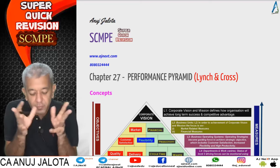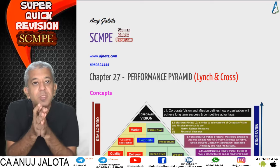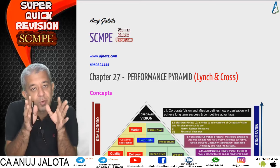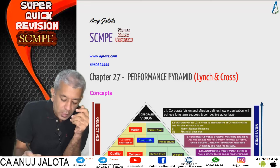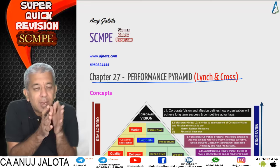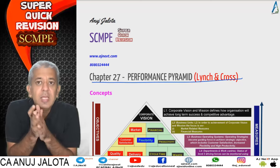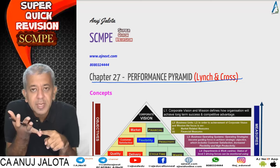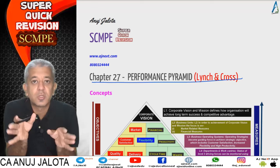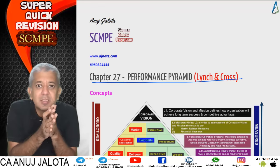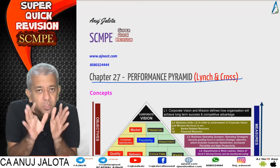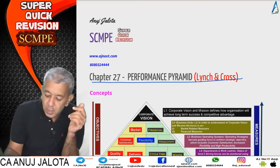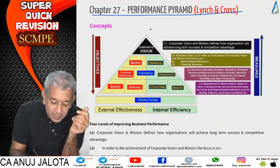Welcome back to this super quick revision series. We are on the Performance Pyramid. Before this we covered the Balanced Scorecard, Triple Bottom Line, and Performance Prism. Now it is the Performance Pyramid, by Lynch and Cross. On slightly similar lines to the Balanced Scorecard, this performance measurement system focuses on two things: your shareholders and your customers. It tries to say all things matter, but these are the prime focus of any company.